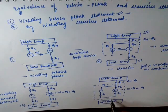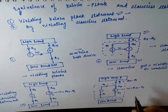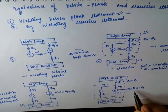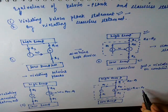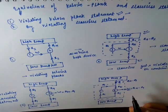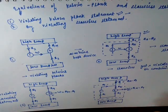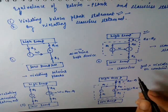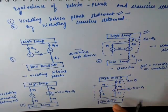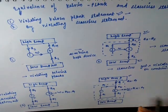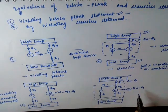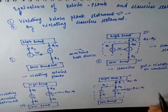In this combined case, we are getting a device that delivers work W to the surroundings and takes heat from a single reservoir. This is the single reservoir from which this device is taking heat and delivering a net amount of work equal to Qh minus Q1. So it violates the Kelvin-Planck statement.